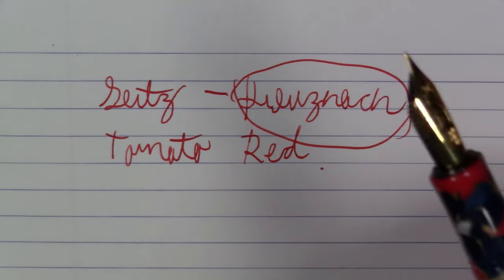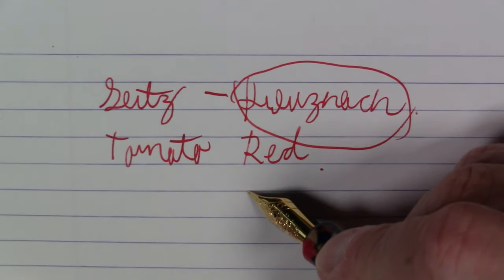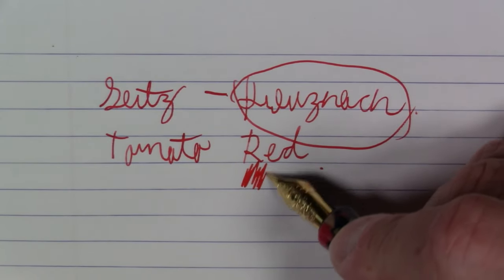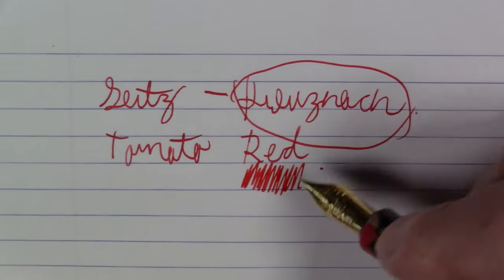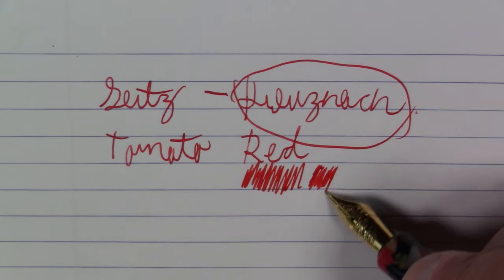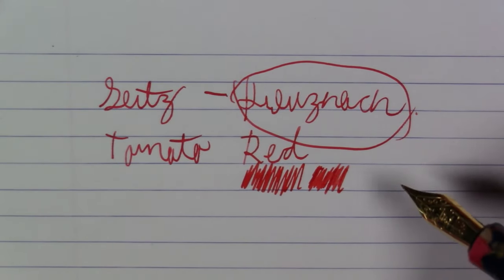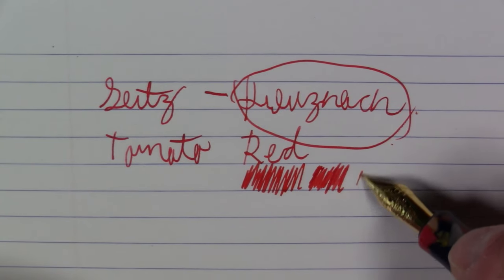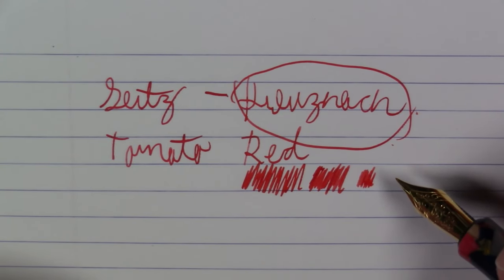And it is a well-named ink. It is a red that is somewhat evocative of tomato. Definitely is a more orangey kind of red. It is still definitely in the red category. I don't think it's quite crossed the line into the orange category. But it looks like what I would say from a tomato red perspective.